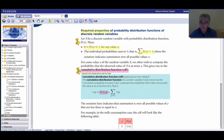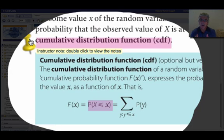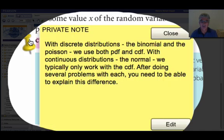Now, cumulative distribution function, where we find out how many observations were less than a certain value. With discrete distributions, the binomial and the Poisson, which we'll be doing soon, we use both the CDF and the PDF. And they're on your calculator. With continuous distributions, such as the normal distribution, which we'll be doing, we typically only work with the cumulative distribution function. We can do the PDF, but most of the problems we'll be doing, we'll be using the CDF. Now, after working with several problems from each distribution, you need to be able to explain this difference.